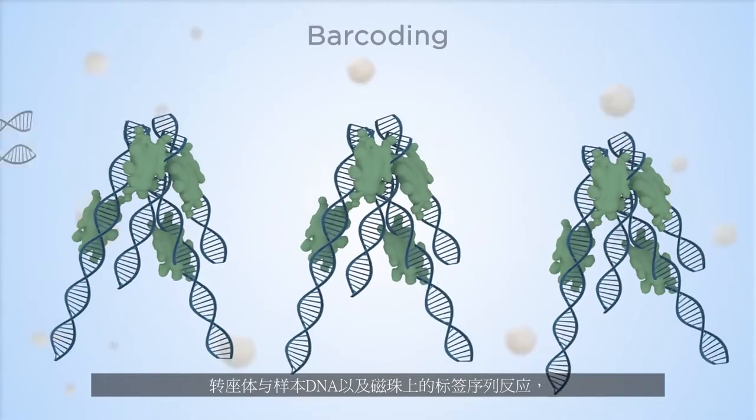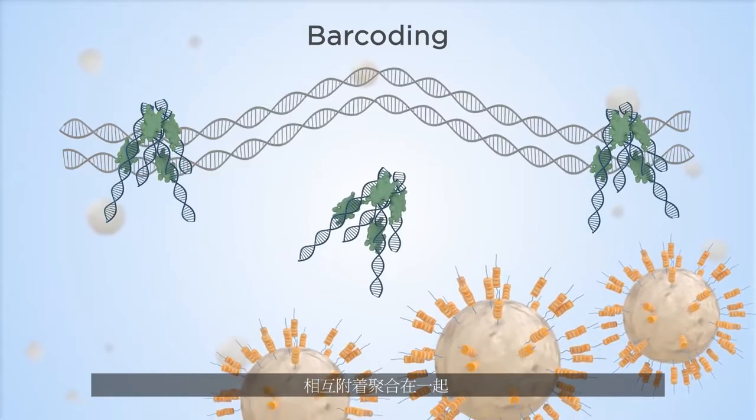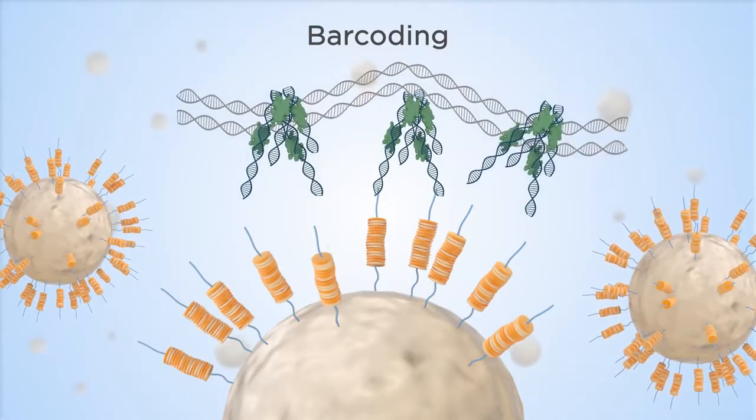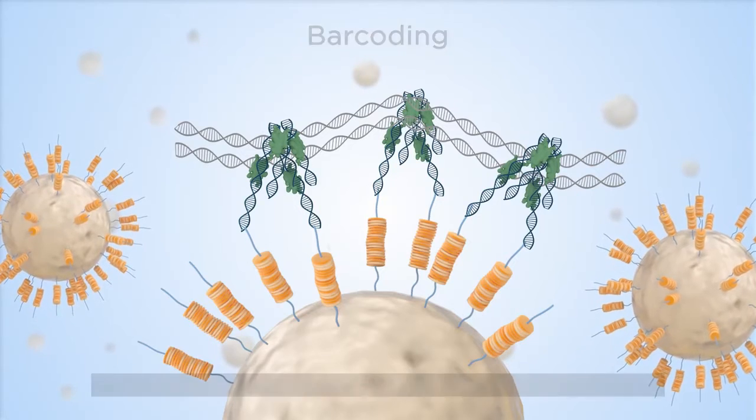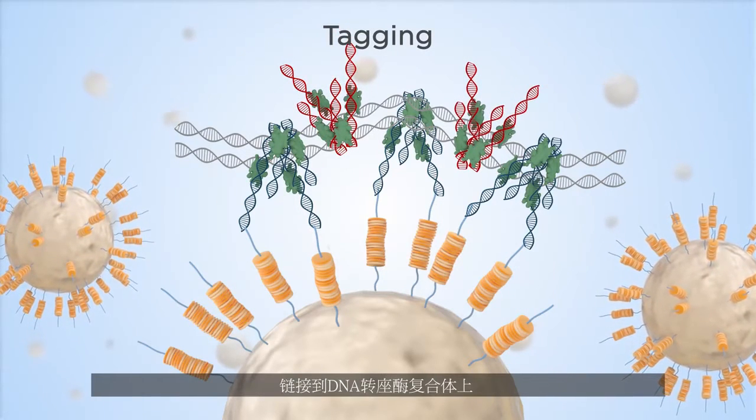The transpososomes react with the DNA and the barcode, drawing them together until they're attached. A tag is then inserted on the DNA fragment complex by a second transposase.